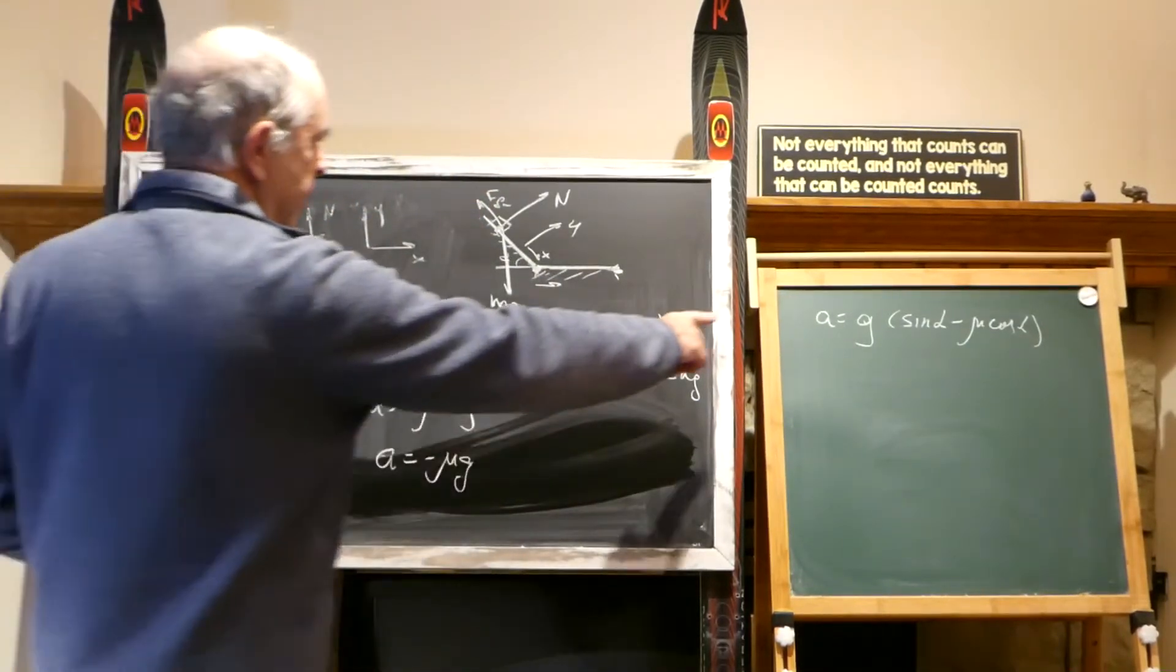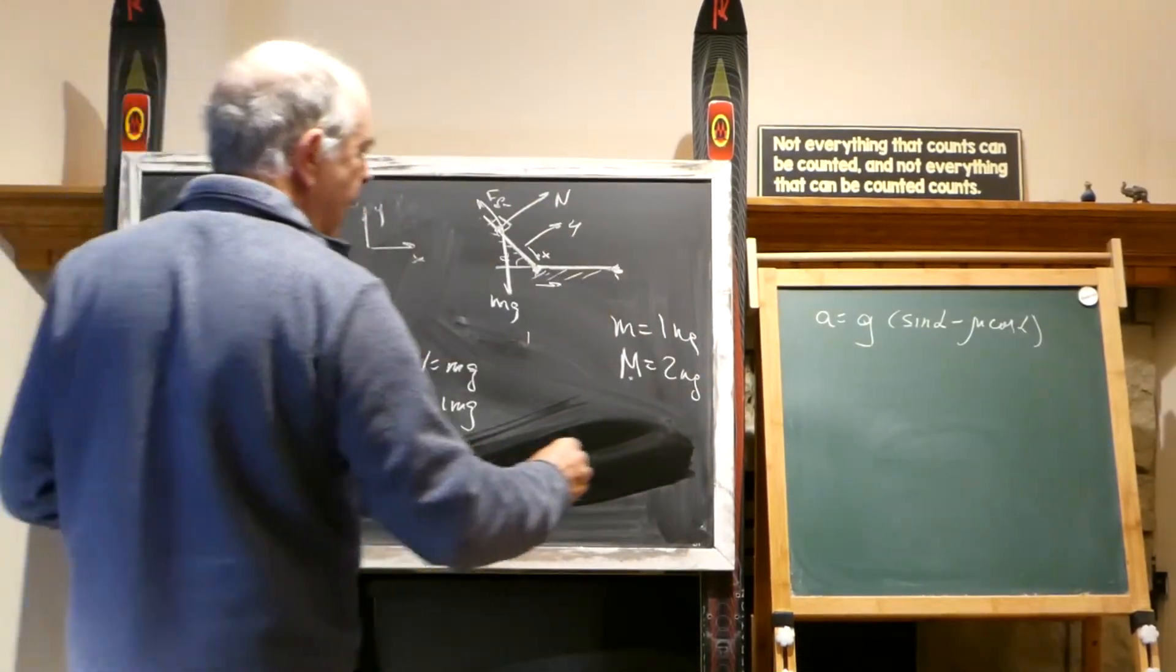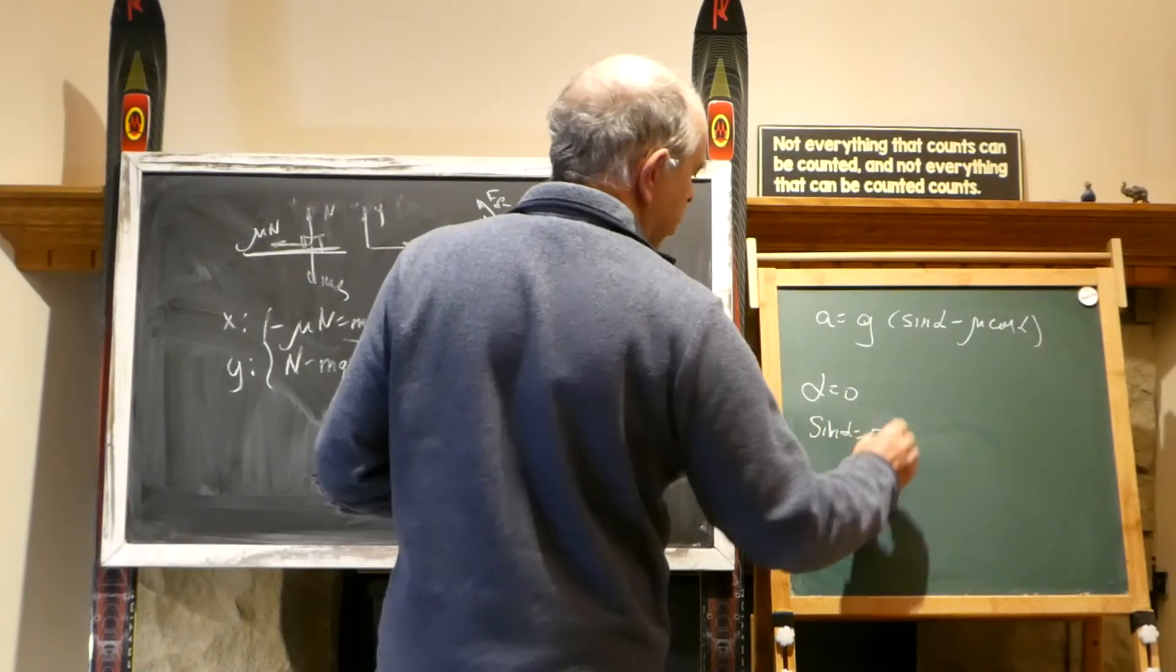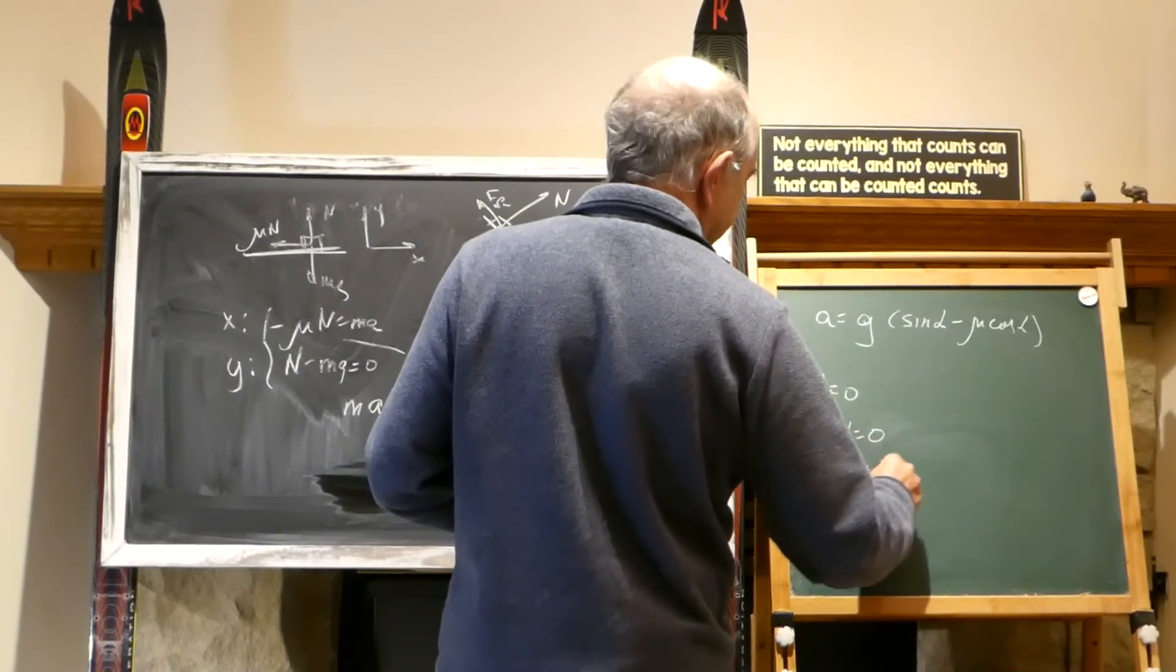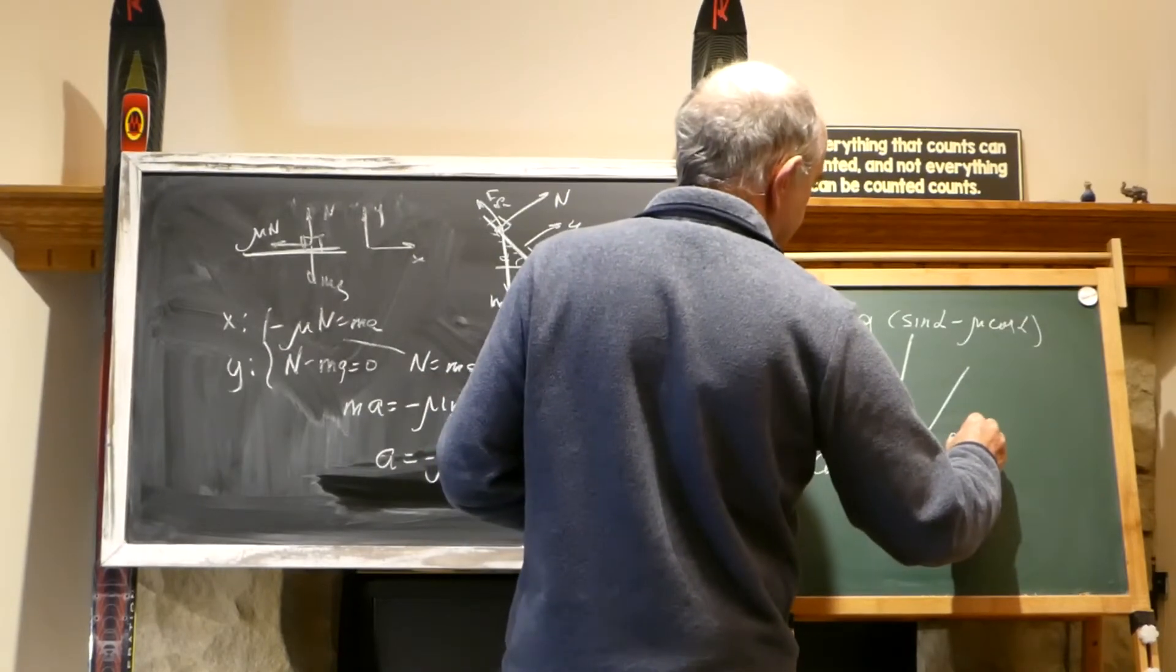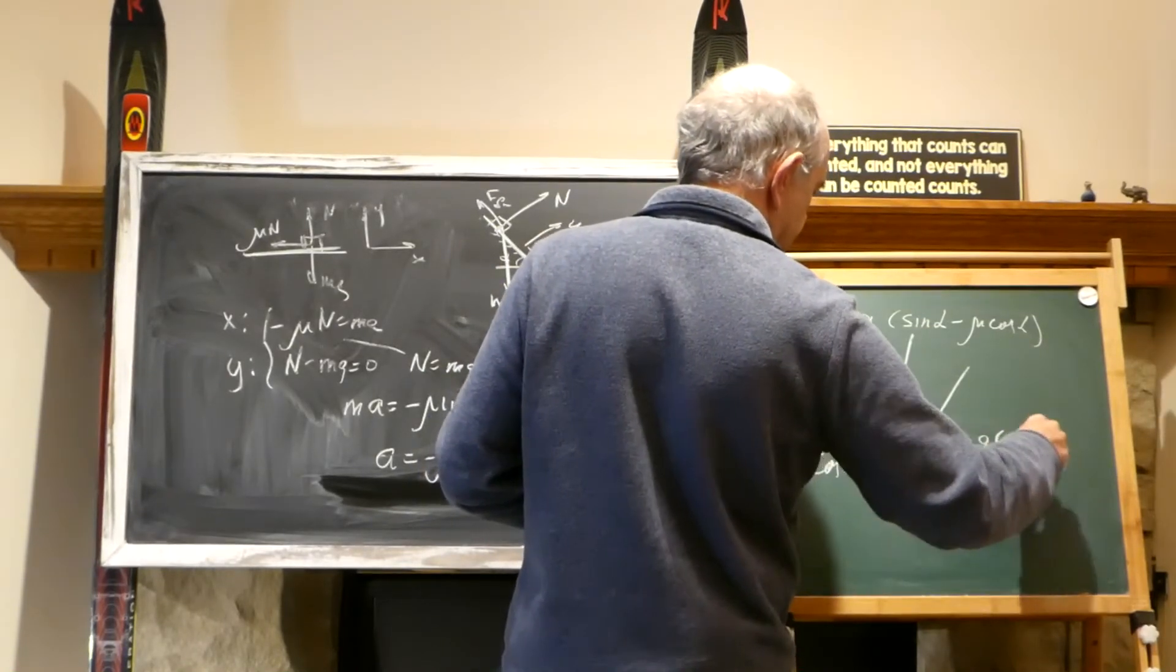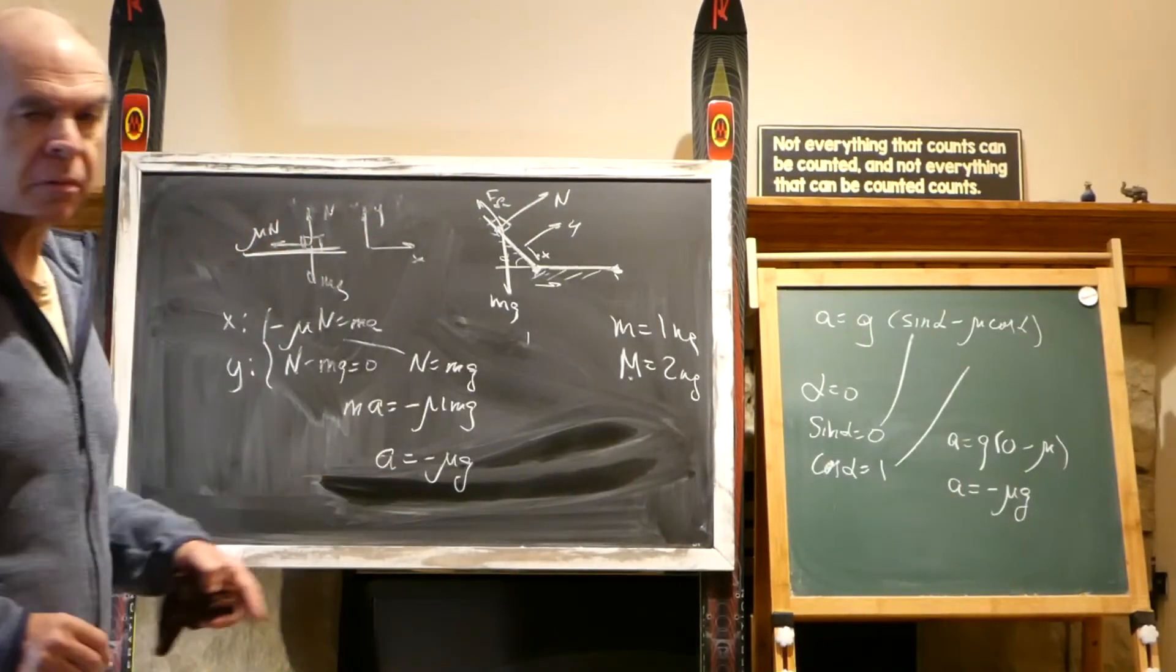because this surface is the same incline where alpha equals zero, and if alpha equals zero, sine alpha equals zero, and cosine alpha equals one. And if I plug this here and here, I will receive A equal G, this would be zero instead, and this would be minus mu, and this would be A equal minus mu G, and this is exactly the same result.